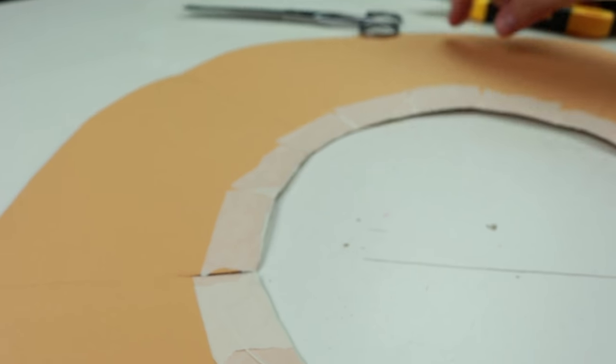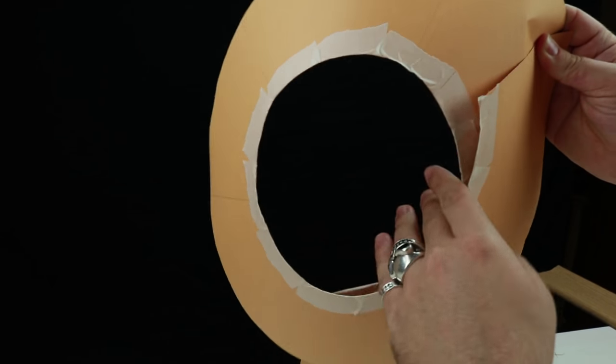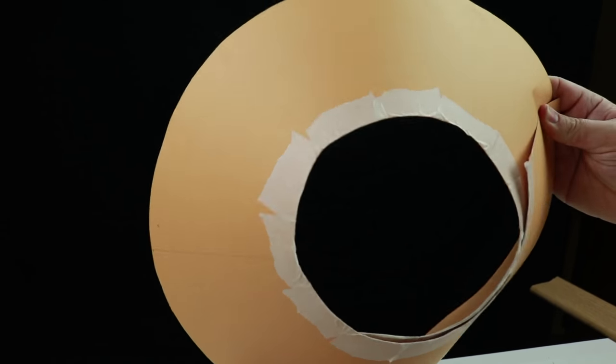Now our homemade Elizabethan collar is ready, we can secure it to the neck of our pet with the help of some strong adhesive tape.